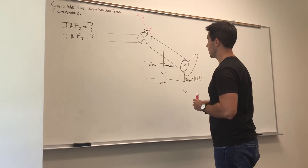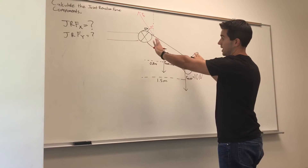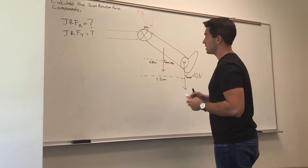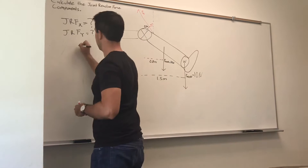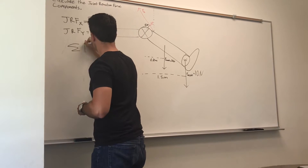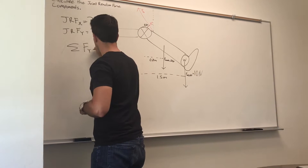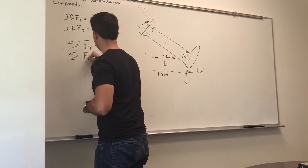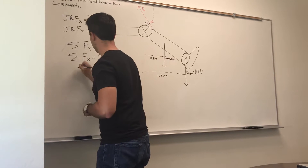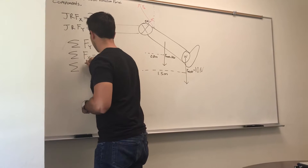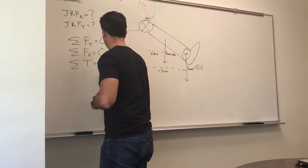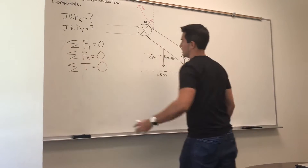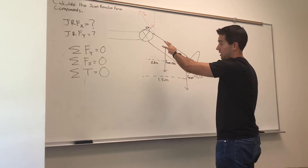This problem is static — we know the leg is not going to be moving. When a problem is static, we can use three different equations: sum of forces in the Y direction equals zero, sum of forces in the X direction equals zero, and sum of torque equals zero. These are the three equations we can use anytime the problem is static.